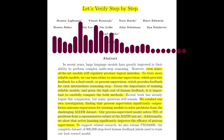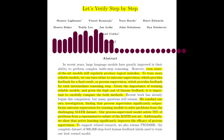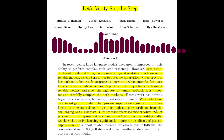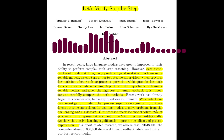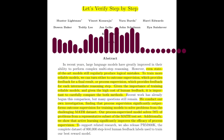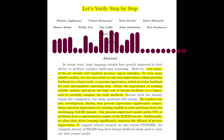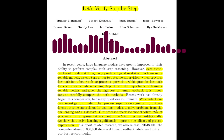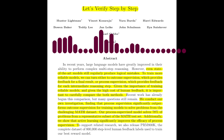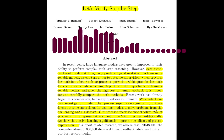So process supervision seems to offer a more granular and precise form of feedback. What are the potential benefits of this approach? Process supervision provides more specific information about the model's reasoning process. This allows for more effective credit assignment, helping the model learn to avoid similar errors in the future. Additionally, it aligns more closely with human reasoning, as we typically evaluate each step in a problem-solving process.